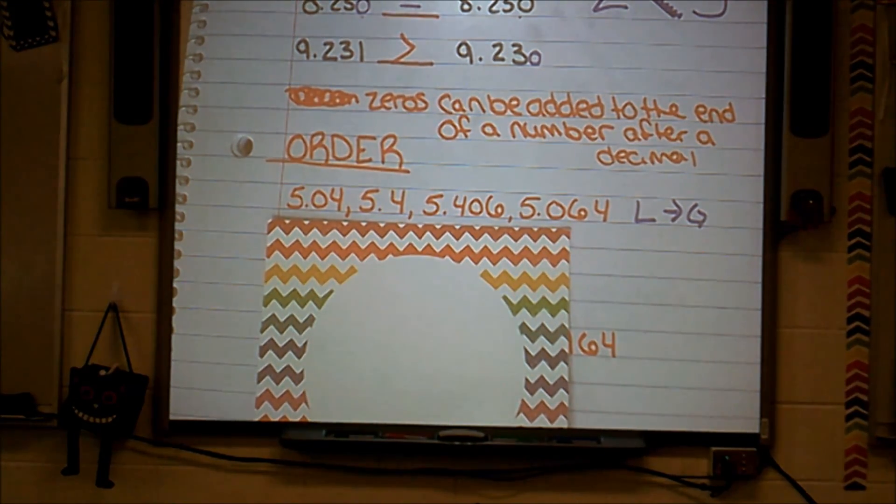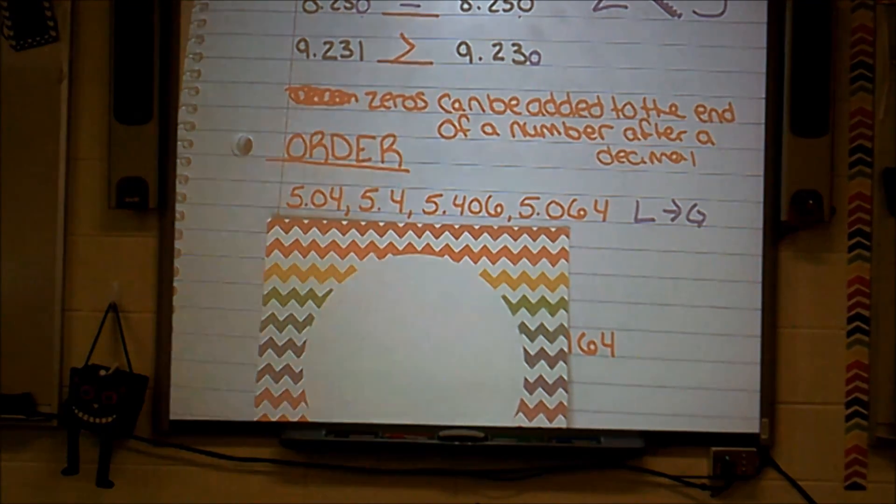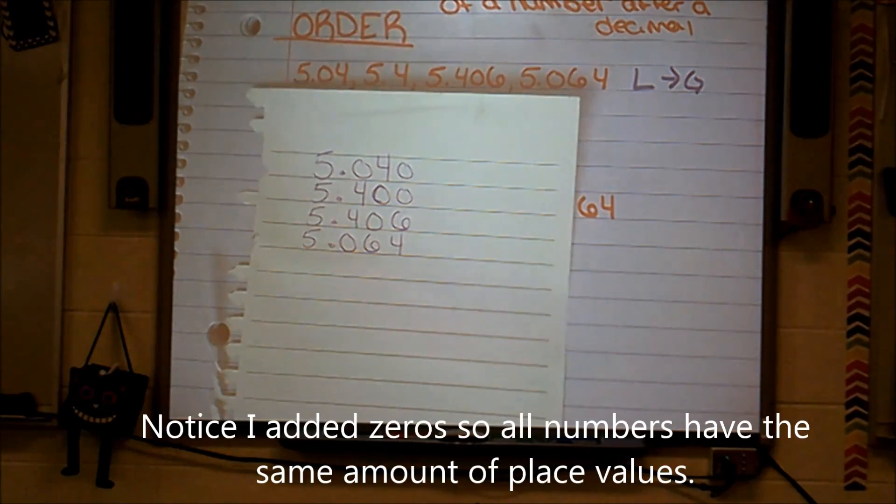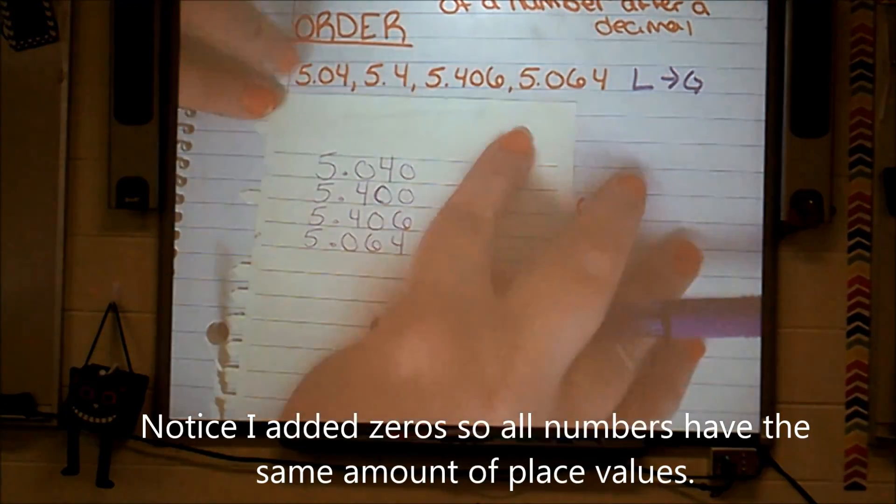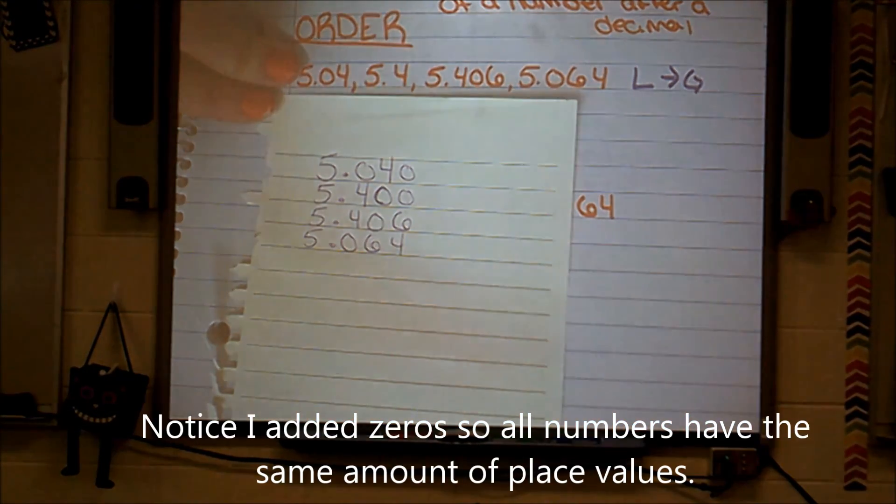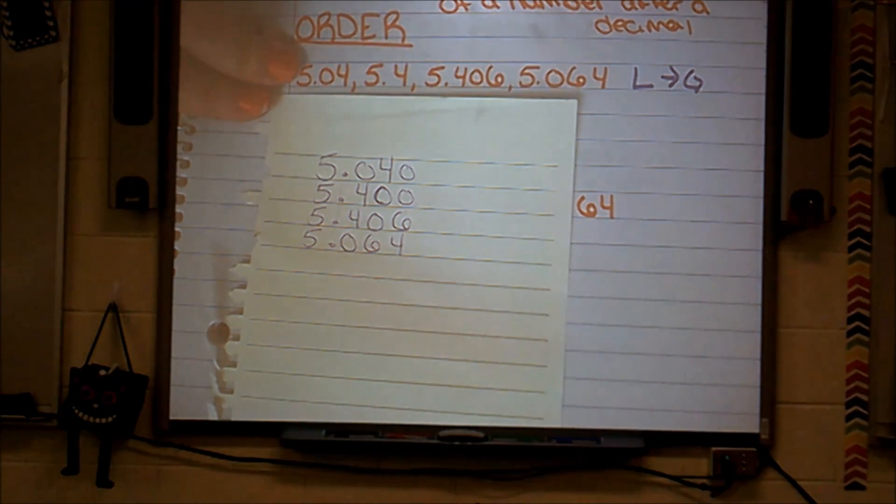Personally, my favorite way to do this is to make sure, for one, that all of my numbers have the same number of digits after the decimal. So I'm going to start there. I'm going to make sure all of my numbers have the same number of digits behind my decimal. So there are my four numbers that I have listed here on my notebook. I just wrote them right on top of each other to be able to see them more clearly.